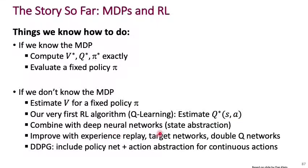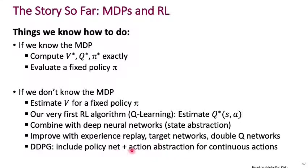We've learned how you can abstract the state using deep neural networks within the Q-learning approach, and we've seen how to improve that further with experience replay, target networks, and double Q networks. Most recently, we've seen DDPG, where we can include a policy network and also introduce an action abstraction into the Q network, which helps handle continuous actions.